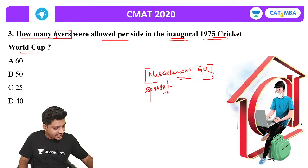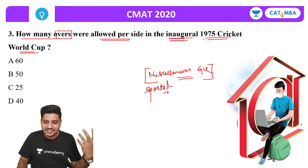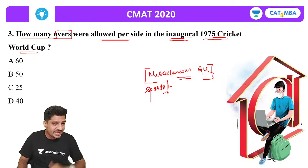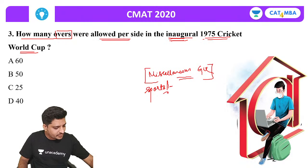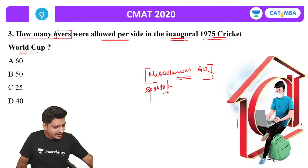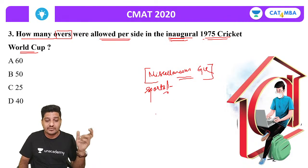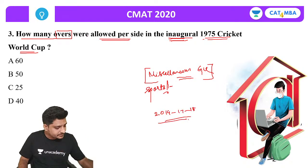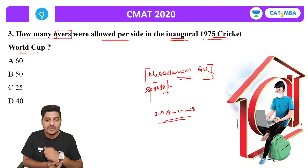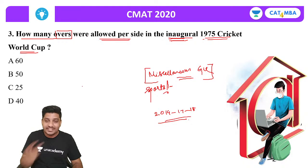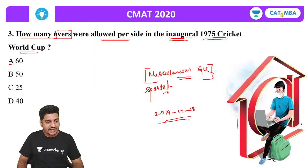There was some lag from YouTube, so I refreshed. Now I can see your comments. Hello Puja, Raj, Nitesh, Dolly, Mohita, Tanvi — welcome to the class. The correct answer is 60 overs. Miscellaneous GK from the sports section. Nitesh adds: India is the only country to win the 60-over, 50-over and 20-over World Cups — absolutely correct.